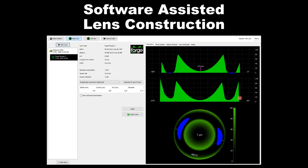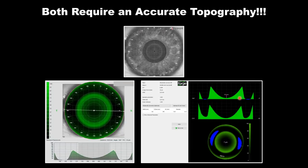This platform is used to build all kinds of specialty and rigid contact lenses. Instead of using central K readings at three millimeters, we're using thousands of data points all the way to the periphery, so we understand the depth the lens needs, the peripheral corneal alignment, and the edge lift — all gained by building directly from topography rather than K readings. You need an accurate first topography; the outcome of the initial lens is based wholly on the quality of that topography.